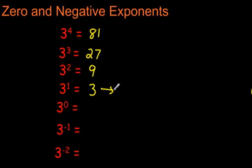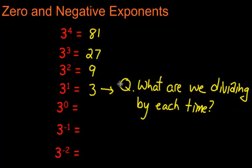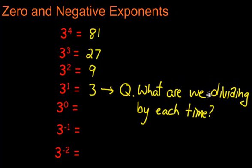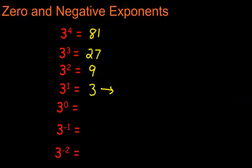So this arrow here is reminding me that I have to ask a question at this point. I stop and ask a question, and here is the question: What are we dividing by each time? If you look at 81, 27, 9, and 3, what are we dividing by each time we do this? Can you tell?